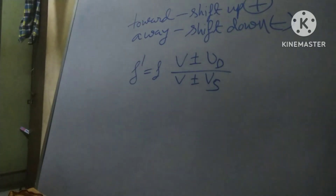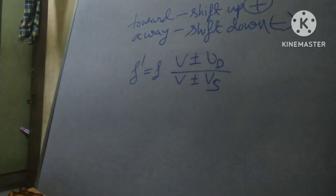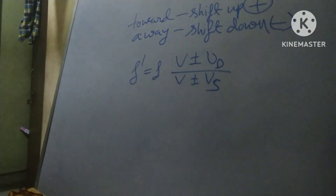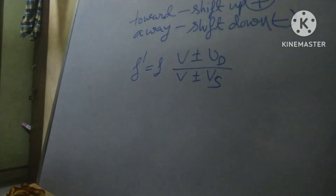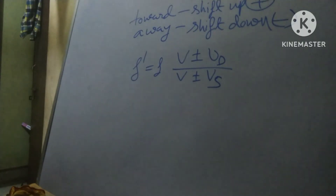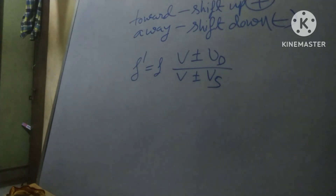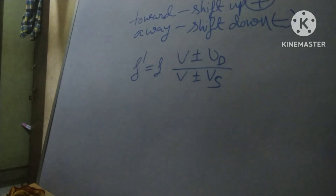Now, my general discussion ends here. There are two specific situations in the Doppler effect. The first is when the detector moves relative to the air and the source is stationary relative to the air — the motion changes the frequency at which the detector intercepts wave fronts, and thus the detected frequency of the sound wave. I shall discuss these two specific cases — detector moving and source stationary — along with the equations, in my next video.